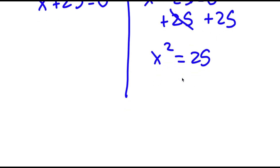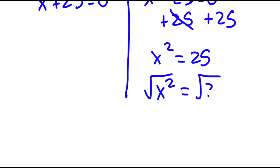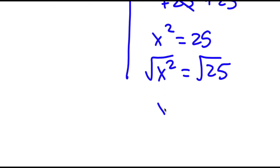And now to solve this, I simply have to take the square root on both sides. So I have the square root of x squared is equal to the square root of 25. The square root of x squared is x, and the square root of 25 is positive or negative 5.